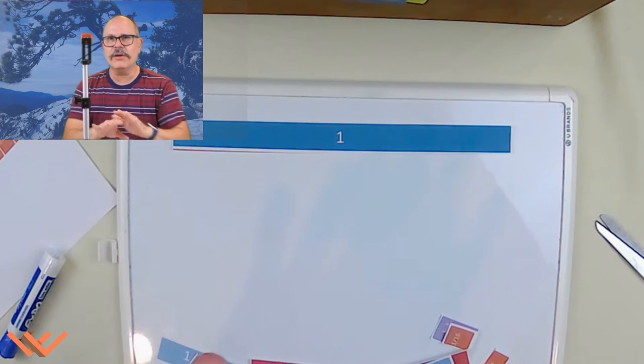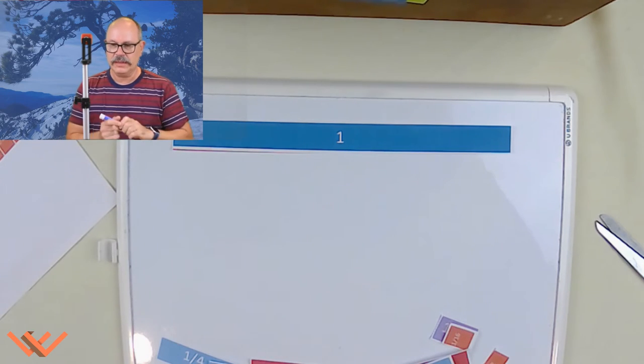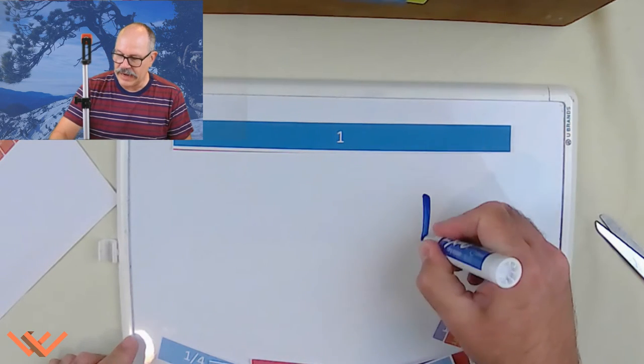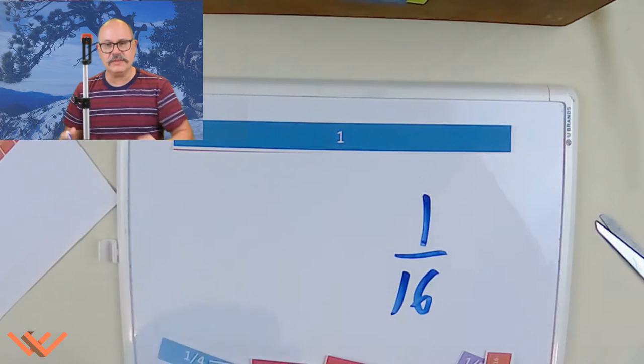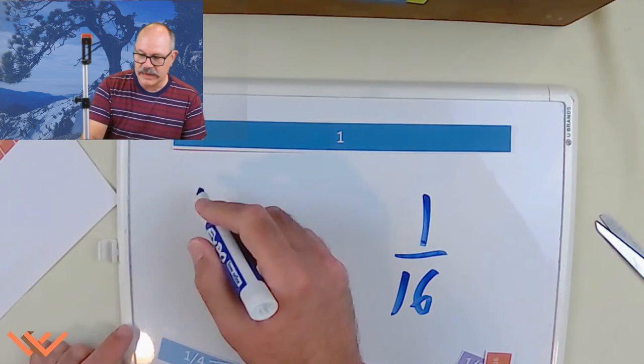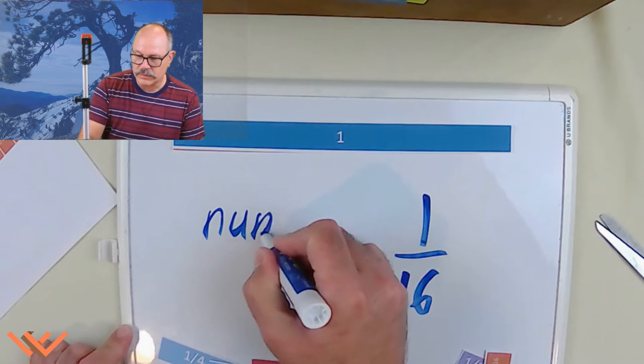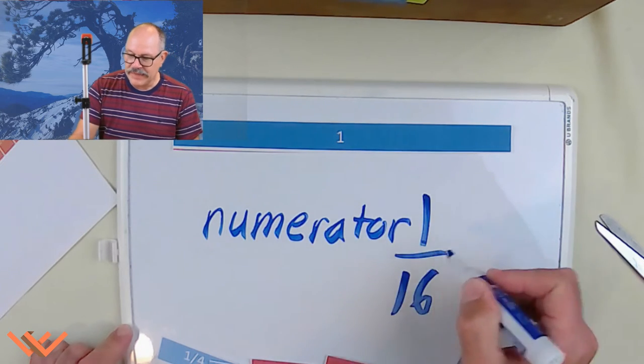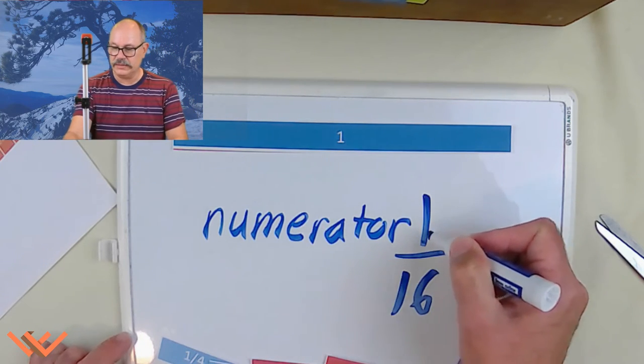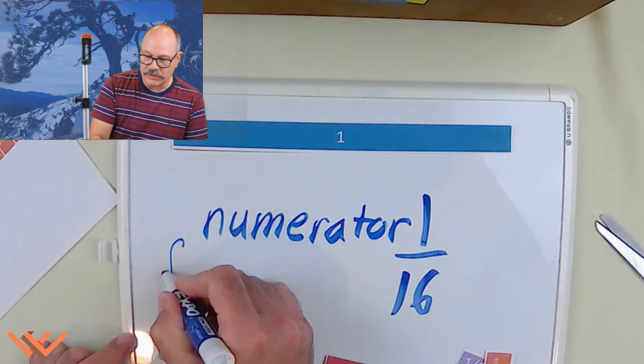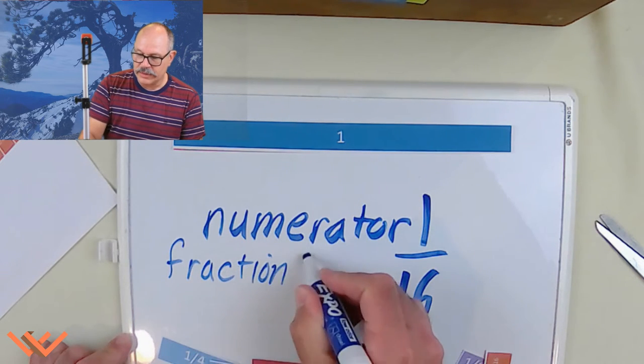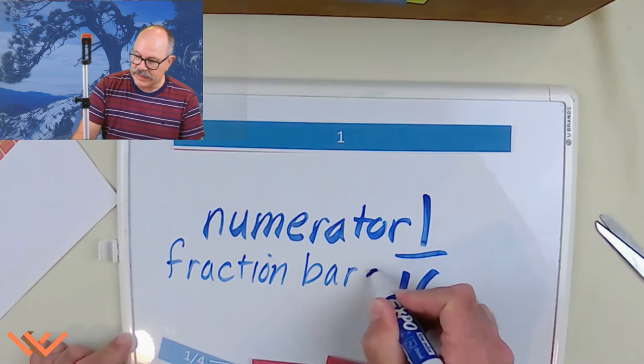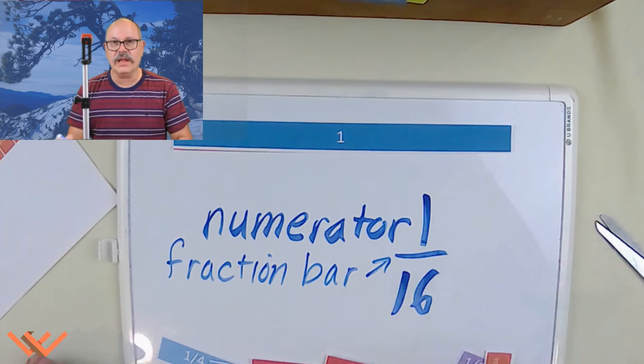But before we move forward, I want to go over some new vocabulary. So, we have this fraction. One sixteenth. But what do all these pieces mean? Well, let me explain. So, we have the numerator. And that's the top number here. And then there's this thing called the fraction bar. That's that thing right there. That's that horizontal line.